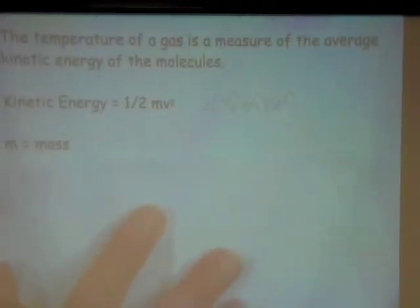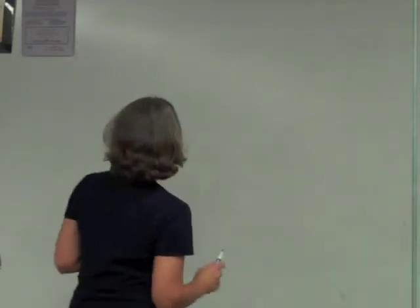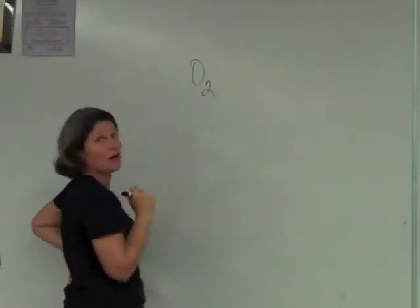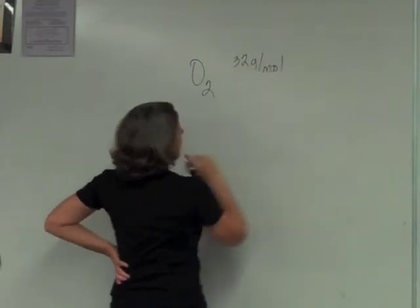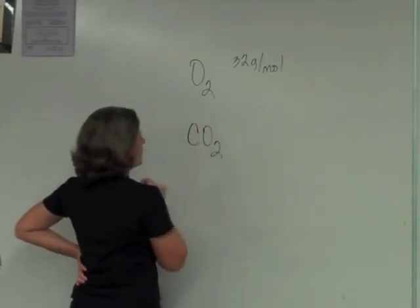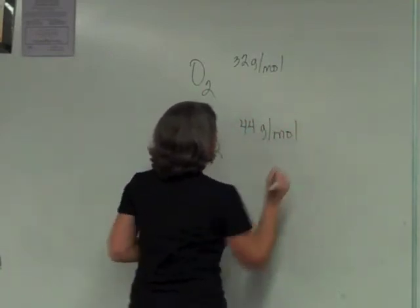Alright, so M is mass, V is velocity. One really important thing to keep in mind about temperature. Okay, so we've got two gases. Let's say we've got oxygen gas, which has got a molar mass of 32 grams per mole. And let's say we've got carbon dioxide gas, which is going to be 44 grams per mole.